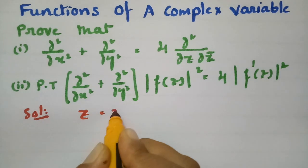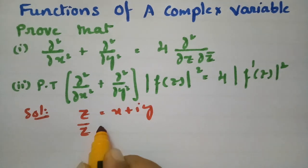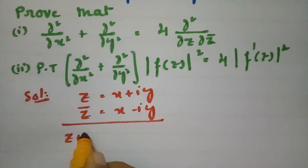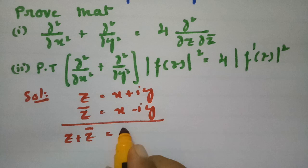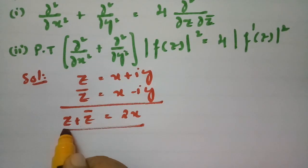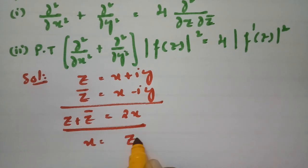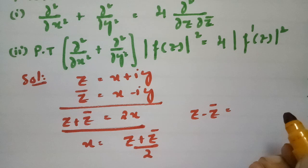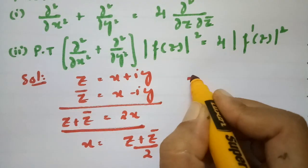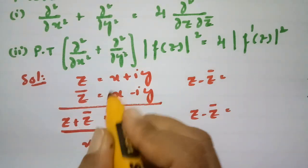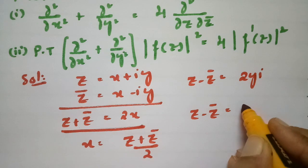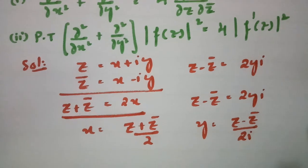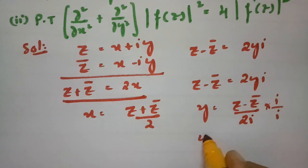From the solution, we have z = x + iy and z̄ = x − iy. If I add these two equations, z + z̄ = 2x, so x = (z + z̄)/2. And if I subtract these two equations, z − z̄ = 2iy, so y = (z − z̄)/2i.